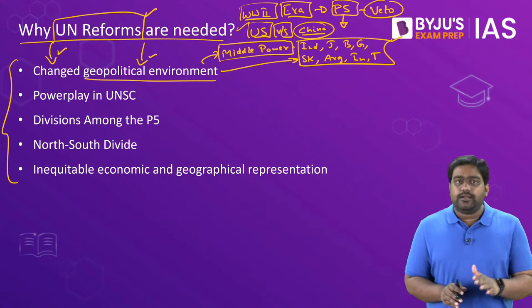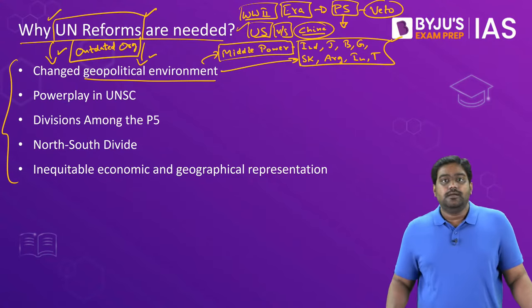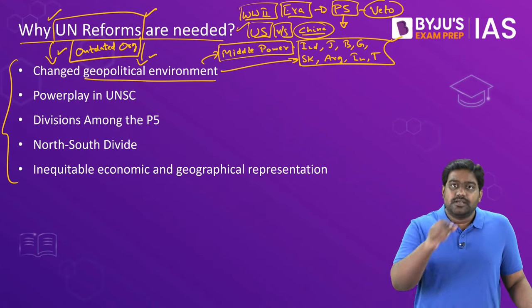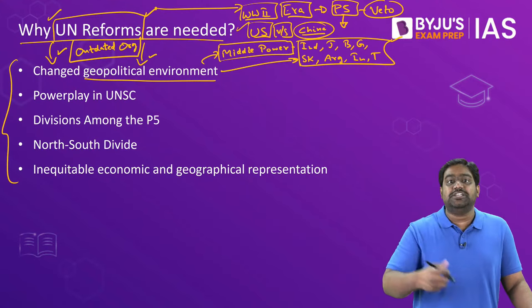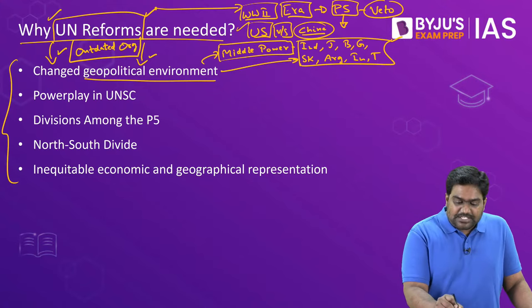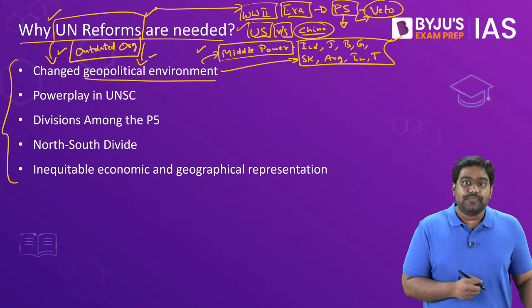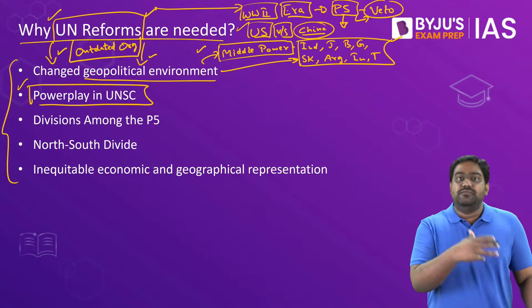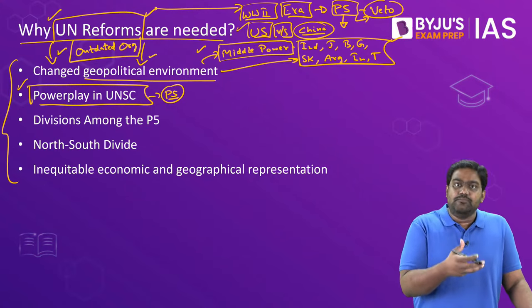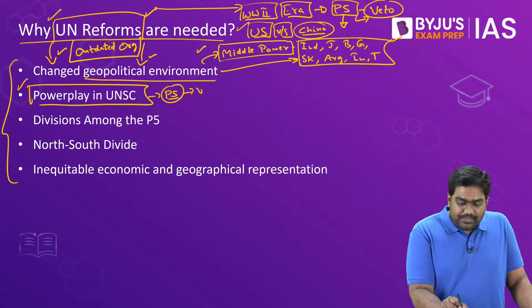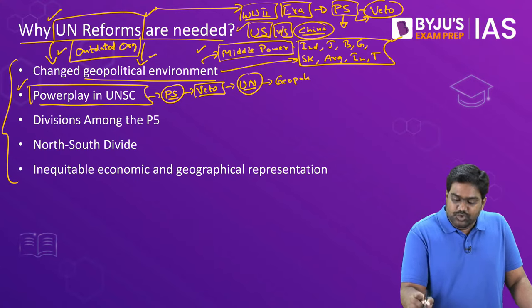Even India has a similar criticism against the UN. India keeps saying that the UN is outdated — its structure and its mandate are outdated. It is said that the UN is still stuck in the Second World War era and hasn't evolved with changing geopolitics. It doesn't give space for other countries which have risen to power, and only the P5 countries retain all the supreme authority. This has led to a power play within the UN Security Council. The P5 countries, which have their own agendas and national interests, use their veto and their supreme authority to manipulate the UN in ways that suit their respective geopolitical interests.